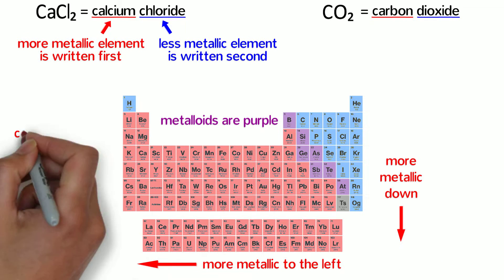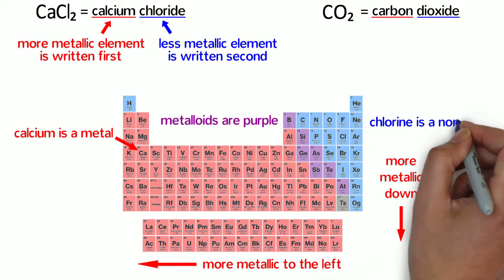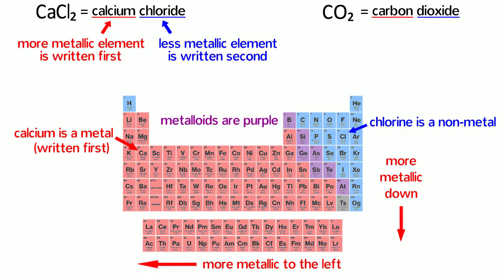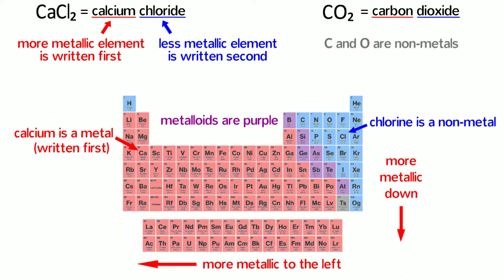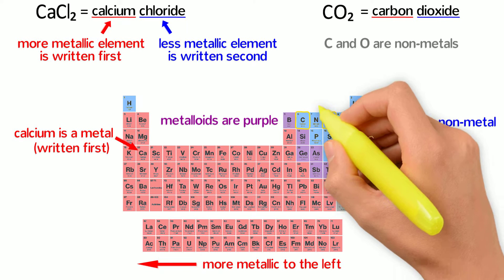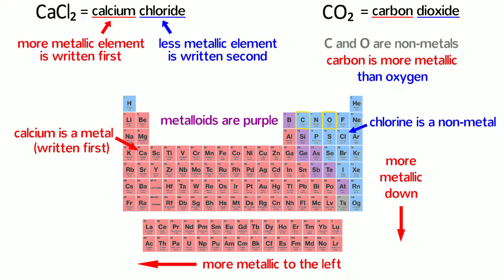In the case of calcium chloride, calcium is a metal and chlorine is a nonmetal, so calcium is written first. However, in the case of carbon dioxide, both carbon and oxygen are nonmetals, but because carbon is to the left of oxygen, it is more metallic. Remember, as you move down and to the left, elements become more metallic, so carbon is written first and then oxygen.